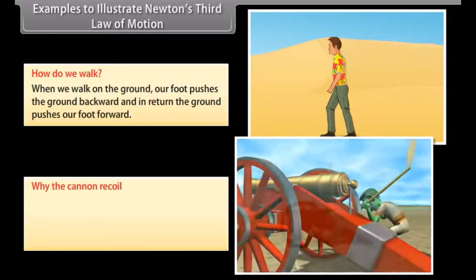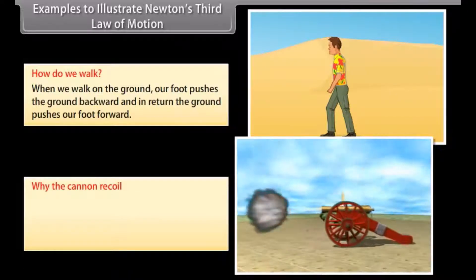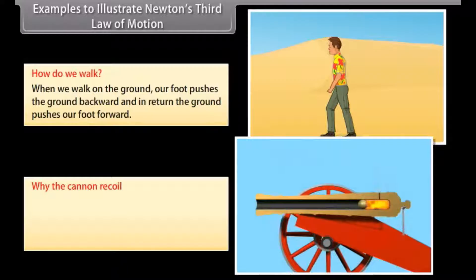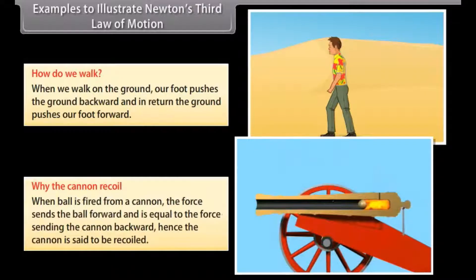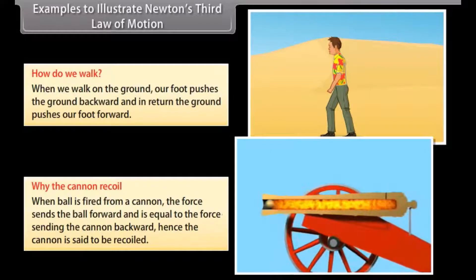Why the cannon recoil? When ball is fired from a cannon, the force sends the ball forward and is equal to the force sending the cannon backward. Hence the cannon is said to be recoiled.